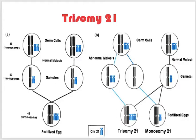Some conditions are called syndromes — like Down syndrome, where a pattern of anomalies occurs together due to a known or unknown cause. Others are called associations — a non-random occurrence of multiple independent anomalies. An example is VACTERL association: V for vertebral dysgenesis, A for anal atresia, C for cardiac anomalies, TE for tracheoesophageal fistula, R for renal anomalies, and L for limb anomalies.